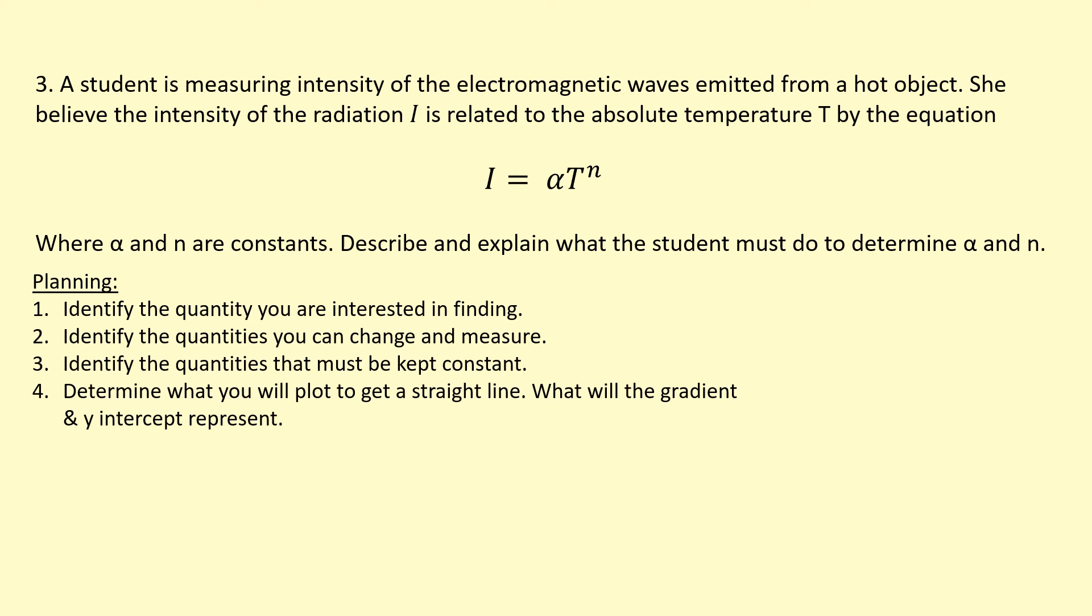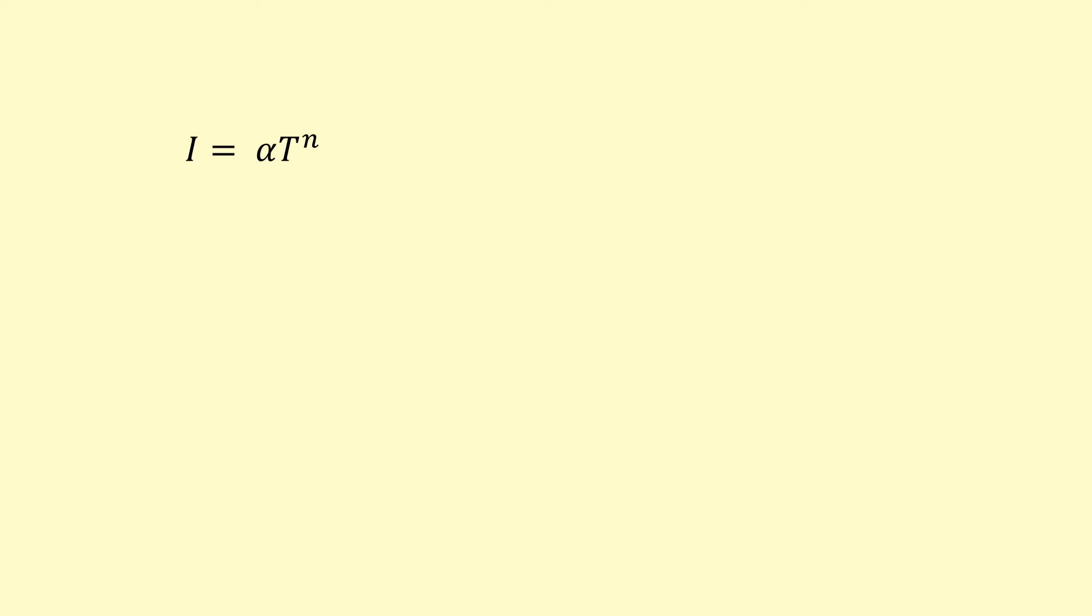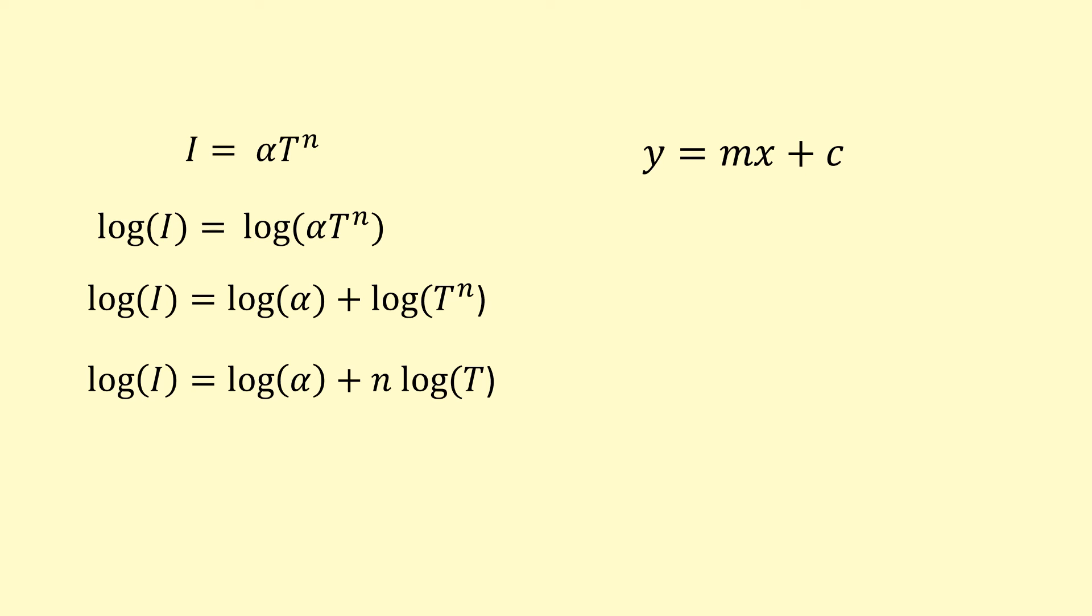Then you think about what you need to plot. That's the important part here. First, I need to get a straight line. Take the equation and compare it to the equation of a line. In this case, we're going to change I and T and N and alpha are unknown. The best case here is to take logs on both sides. You can take any base log, but I'm going to take the log base 10. Then using my log rules, I'm going to separate those. The N comes to the front like so.